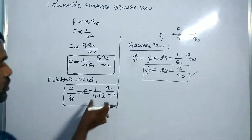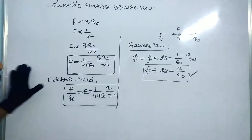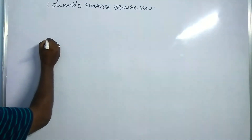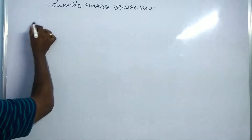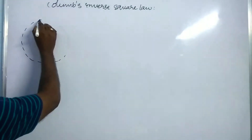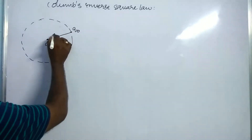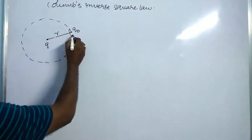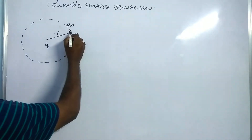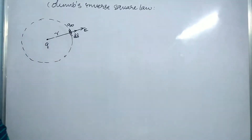By using this, we can prove the Gauss law. Let us see how we can solve it. Let us assume a charge Q is here, and there is a field around it. At a point at distance R, there is a point charge Q₀. In the area of the surface element dS, dS and E will be in the same direction.